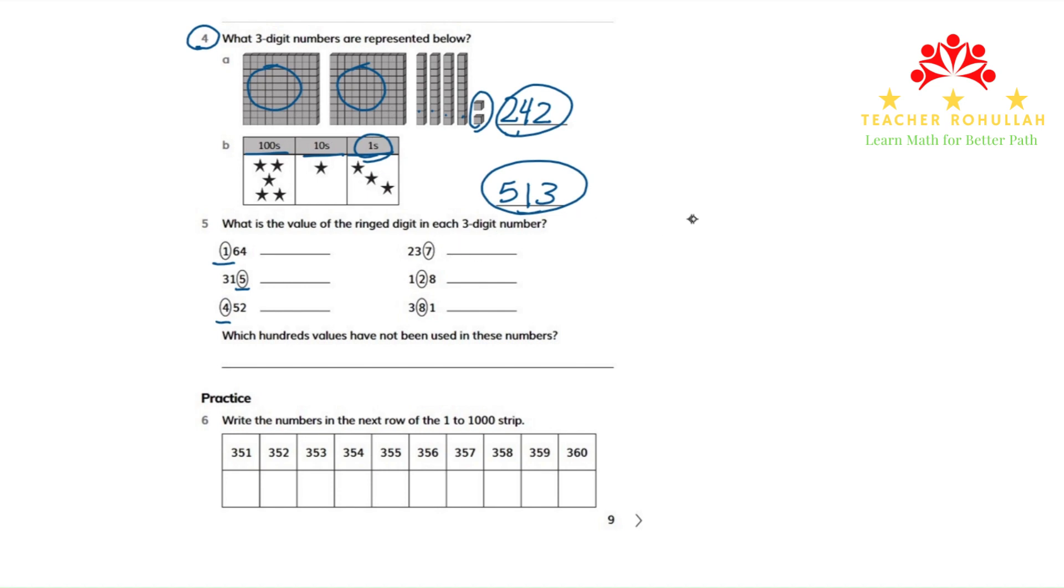Before answering these questions, I will draw a place value chart here. Because the numbers are three digit numbers, we have 1s place, we have 10s place and 100s place.